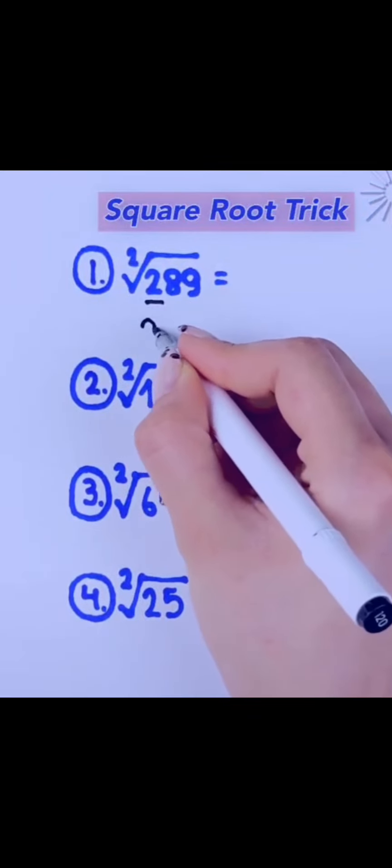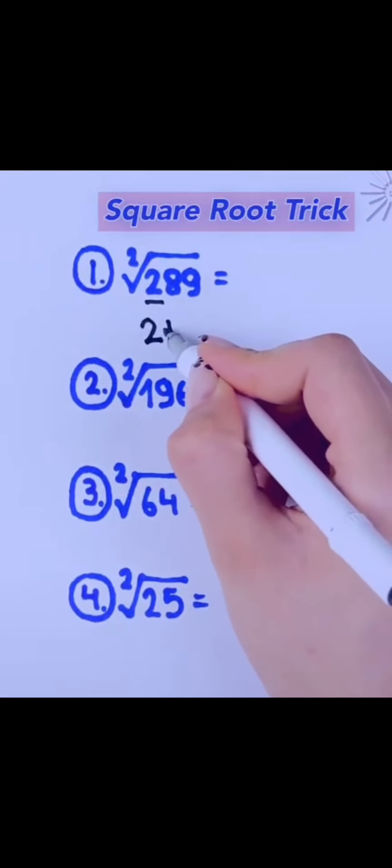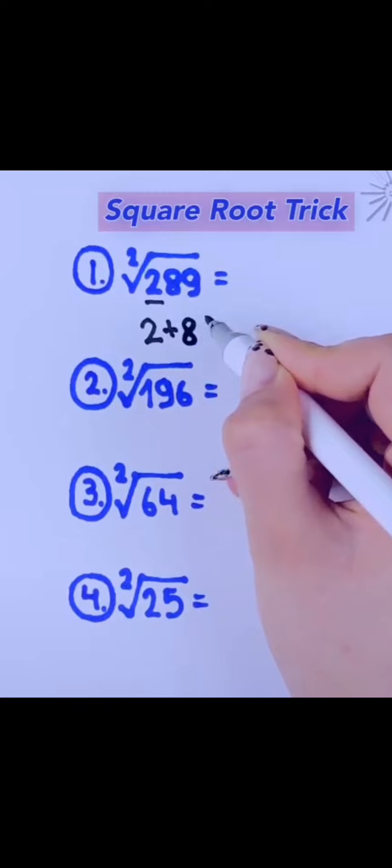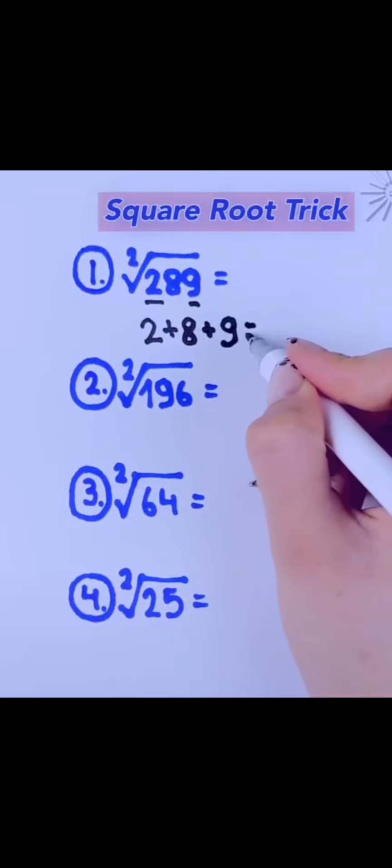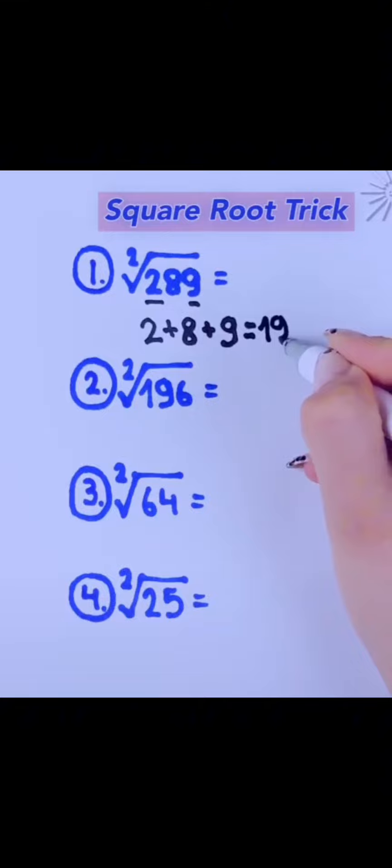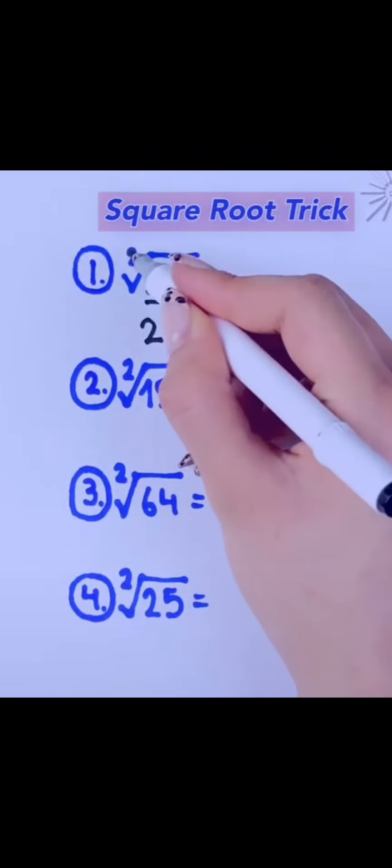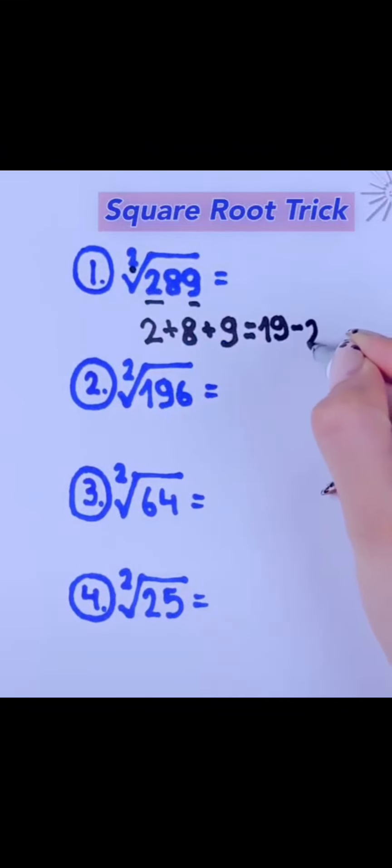Speculation square root trick you have to try. First, take the numbers 2, 8, and 9. When you add them together, you get 19. Now, subtract 2, and you end up with 17.